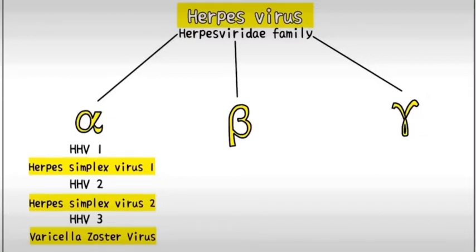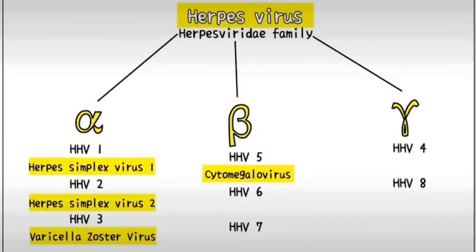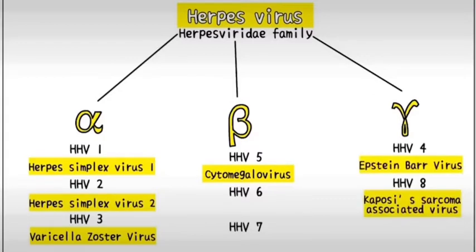Now, the beta subdivision contains HHV5, 6, and 7. Remember, HHV4 has been skipped. Of these, HHV5 is commonly known as cytomegalovirus. In the gamma subdivision, we have HHV4 and 8, which are commonly known as Epstein-Barr virus and Kaposi's sarcoma-associated virus respectively.